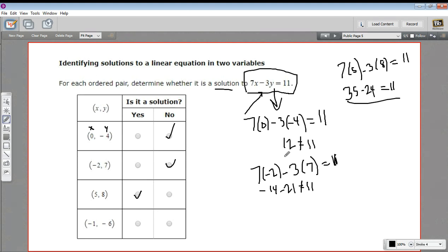Let's try this next one, negative 1 and negative 6. So 7 times negative 1 minus 3 times negative 6 equals 11. Well, 7 times negative 1 is negative 7. A negative 3 times a negative 6, negative times a negative is a positive. So that's a positive 18 equals 11. So this is really like 18 minus 7. That is 11. So this one works too. So this is also a solution to the equation.